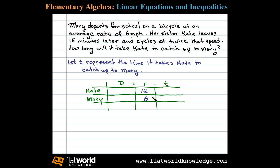Her sister cycles at twice that speed, so if Mary is cycling at six miles per hour, Kate is cycling at 12 miles per hour — we'll put a 12 there. Now, T is the time it takes Kate to catch up to Mary, so by the time she catches up she'll have been cycling T hours. Here's where it gets tricky: Kate leaves 15 minutes later, so Kate would have been cycling less time — 15 minutes less.